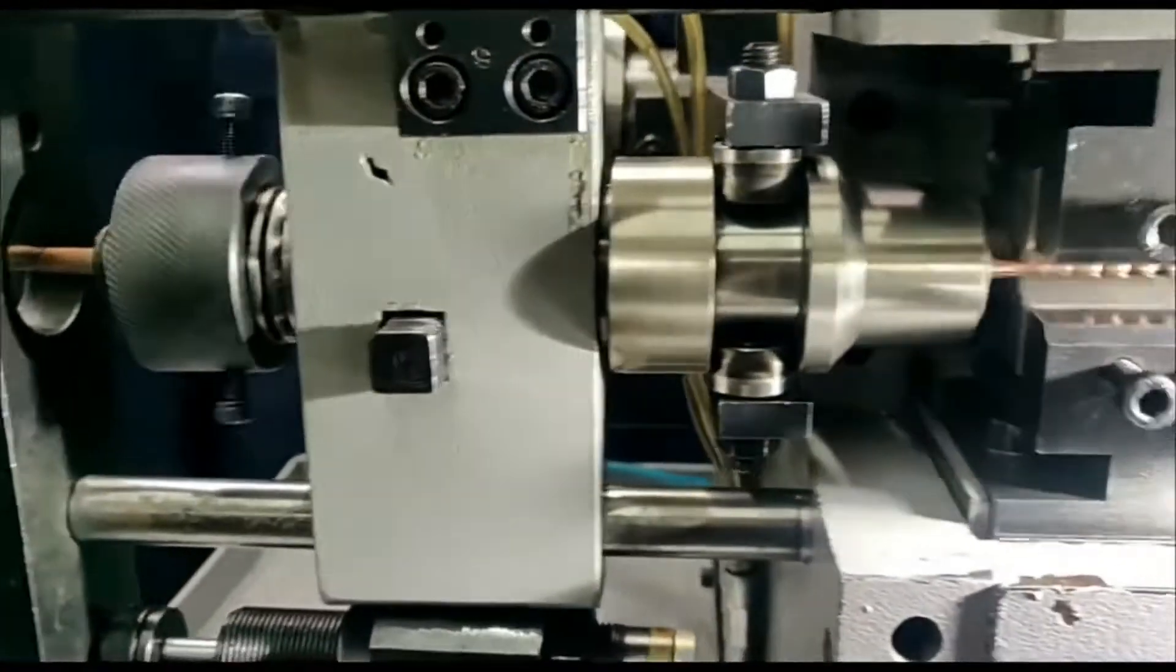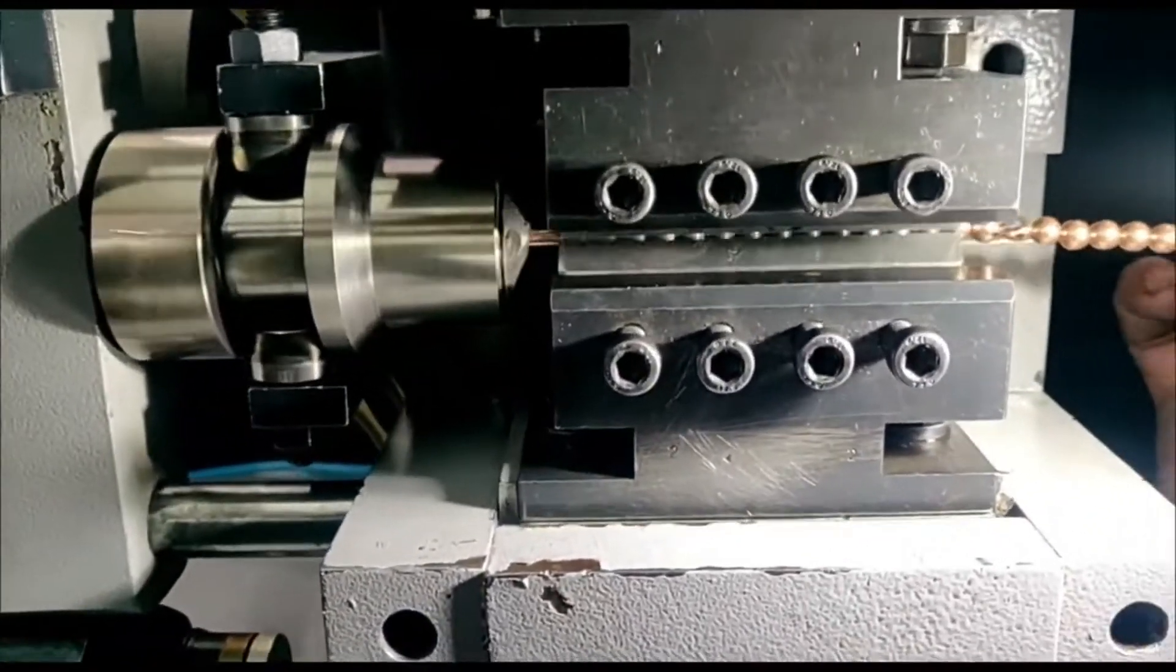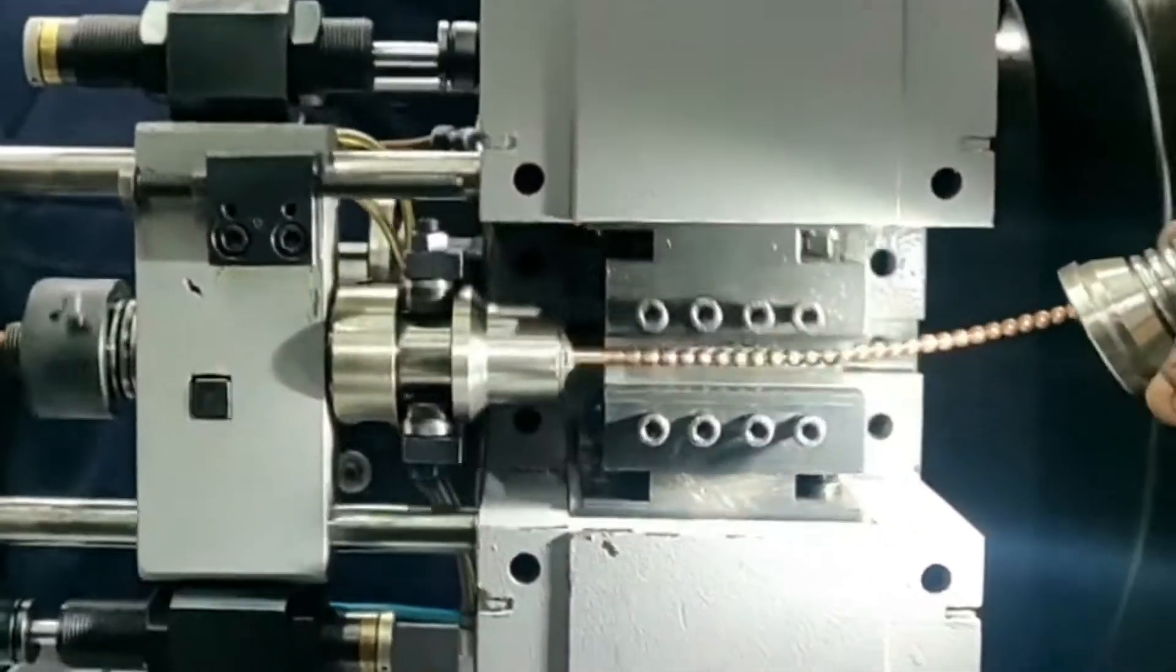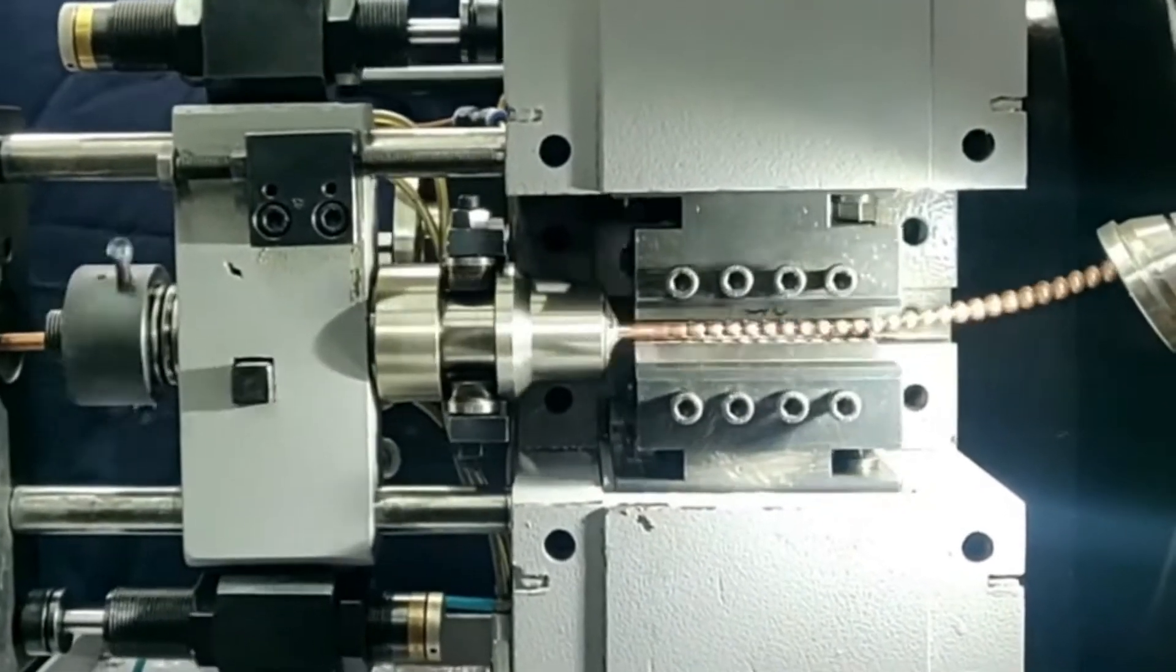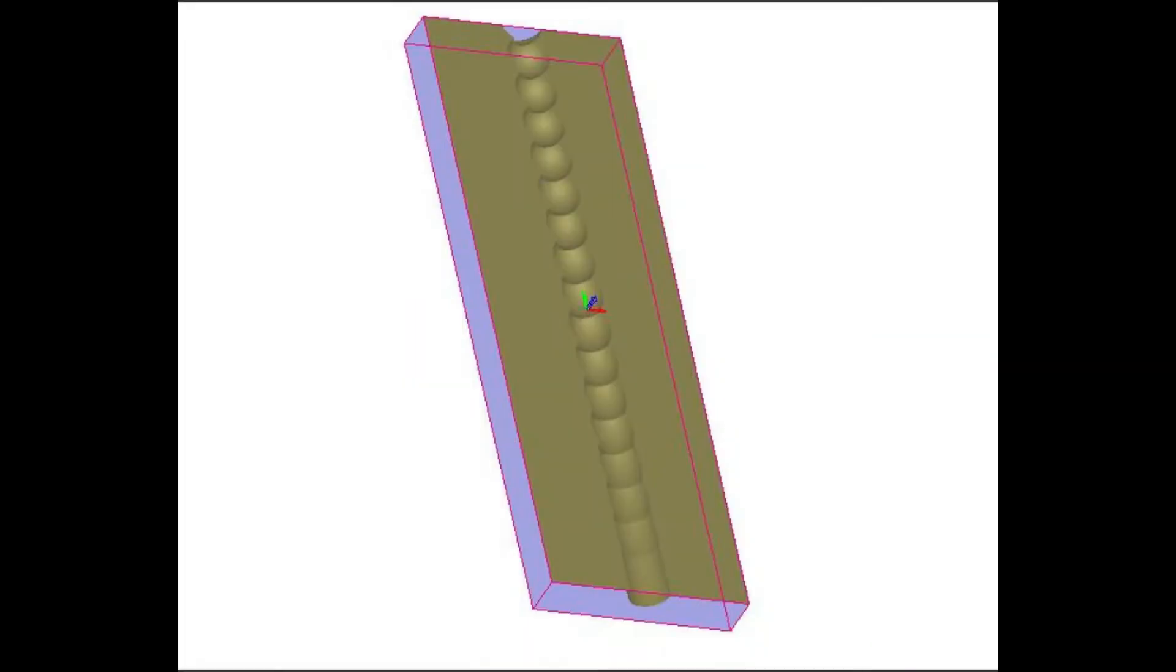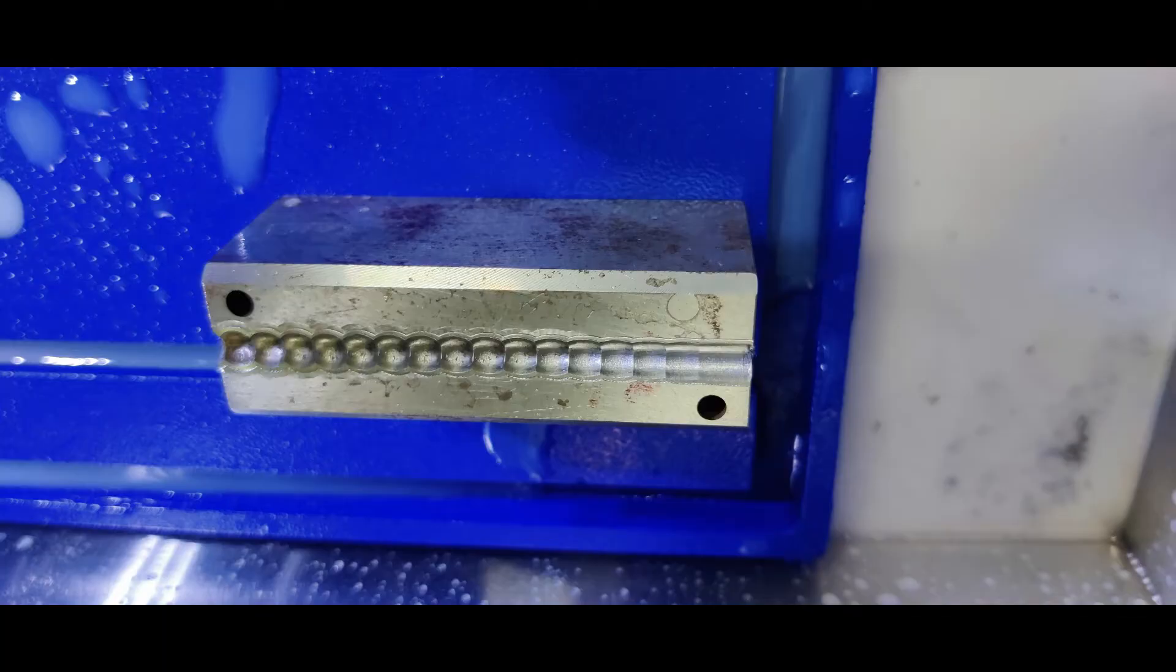The shape of the die will decide the size and shape of the output balls, whatever the ball we are going to manufacture. This is the function of the ball making machine. Creating the right kind of die with the right kind of shape and right kind of size is very important. It can be done with solid machines.